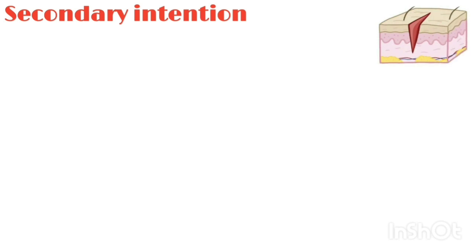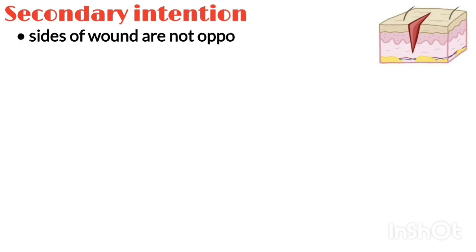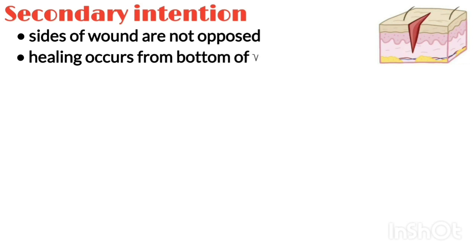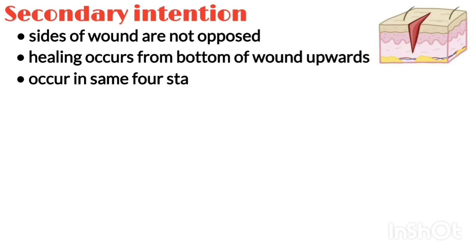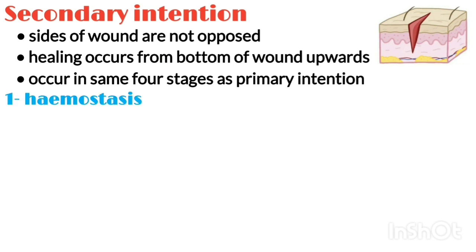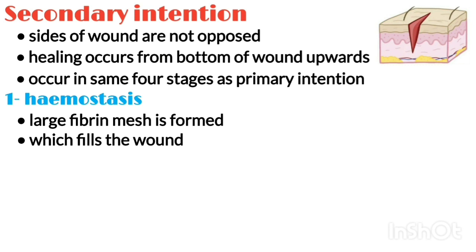Moving towards secondary intention. Healing by secondary intention occurs when the sides of the wound are not opposed; therefore, healing must occur from the bottom of the wound upwards. It occurs in the same four stages as primary intention. Number one is hemostasis: a large fibrin mesh forms which fills the wound.